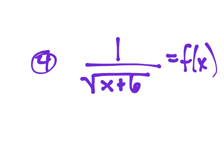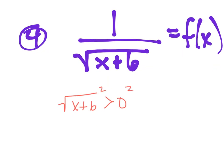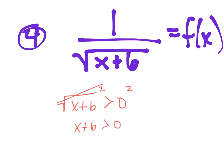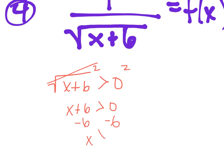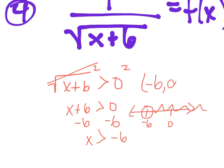The problem here is a square root in the denominator. The square root has to be strictly greater than 0 — not equal — because the denominator cannot be 0, and you can't take the square root of a negative number. So x plus 6 is greater than 0, meaning x has to be greater than negative 6. Graphing it: open dot at negative 6, numbers to the right. Interval notation: parenthesis negative 6 to positive infinity.